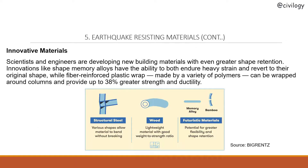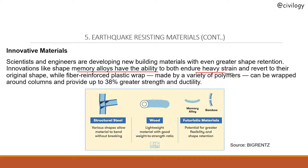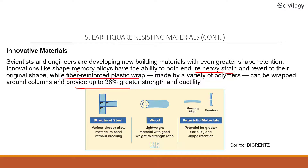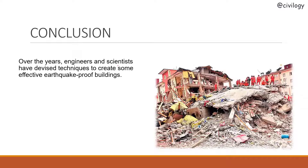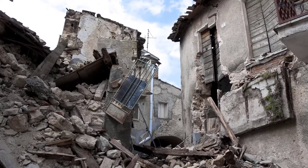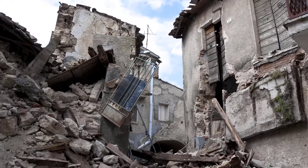New innovative materials include shape memory alloys, which have the ability to endure heavy strain and then return to their original shape. Additionally, fiber reinforced plastic wrap, made from a variety of polymers, can be wrapped around columns and provides up to 38 percent greater strength and ductility.